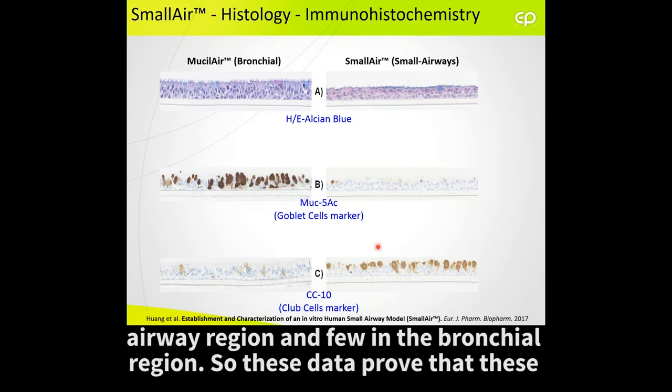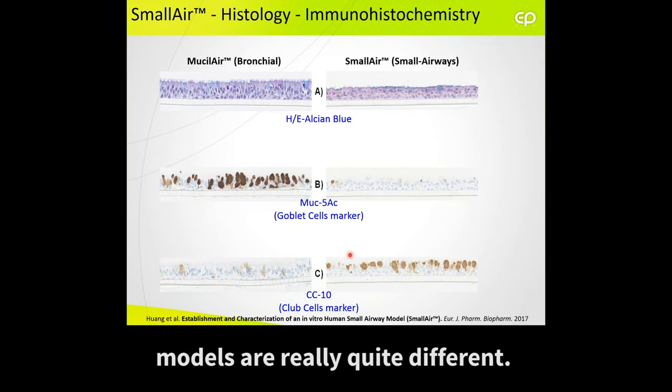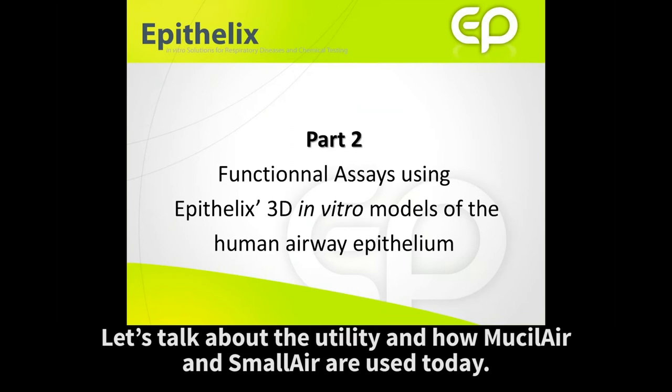And the reverse is true for club cells. Using CC10 as a marker, you have a large proportion of positive signal in the small airway regions, and very few in the bronchial regions. This data proves that these two models are really quite different.